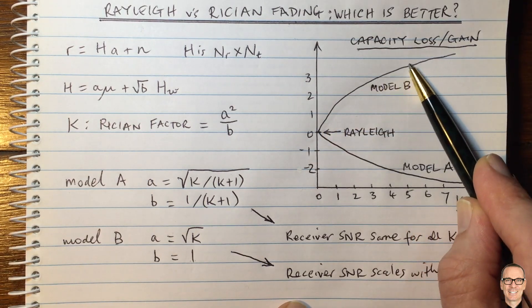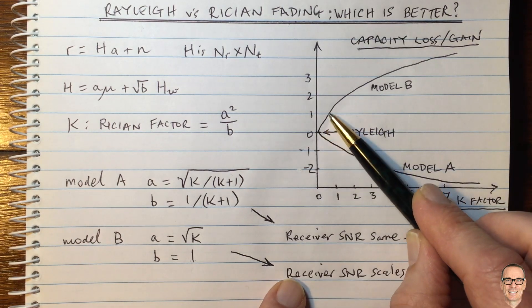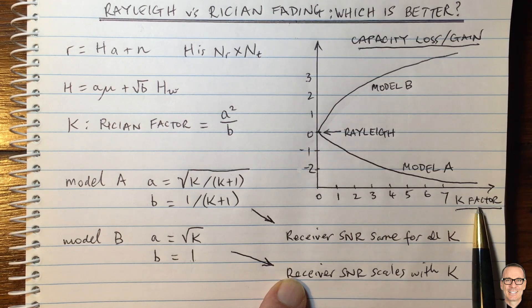So overall, you're getting more SNR at the receiver under model B. And in that case, you get a gain from having an increase in K factor.